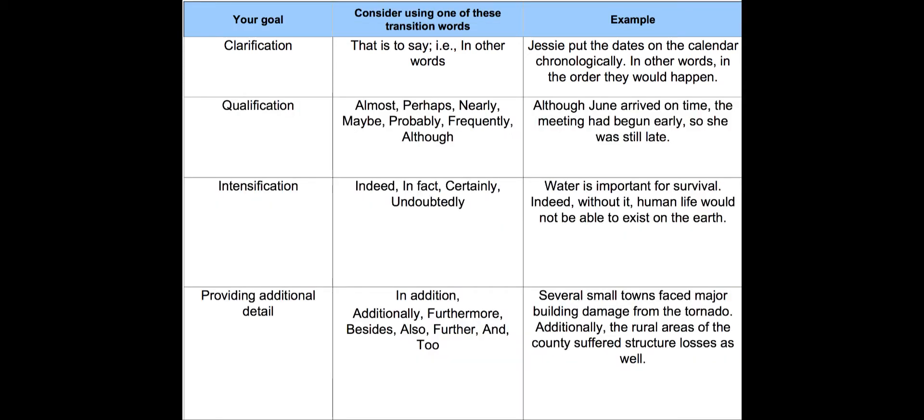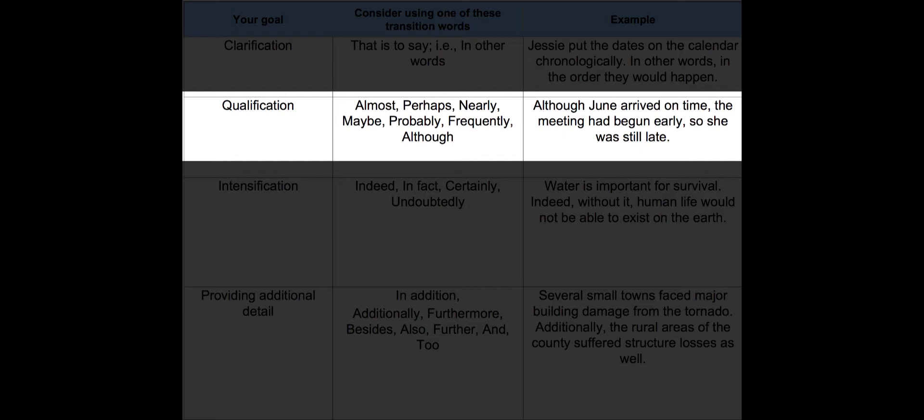If you wanted to show qualification, consider using almost, perhaps, nearly, maybe, probably, frequently, although. Example: Although June arrived on time, the meeting had begun early, so she was still late.